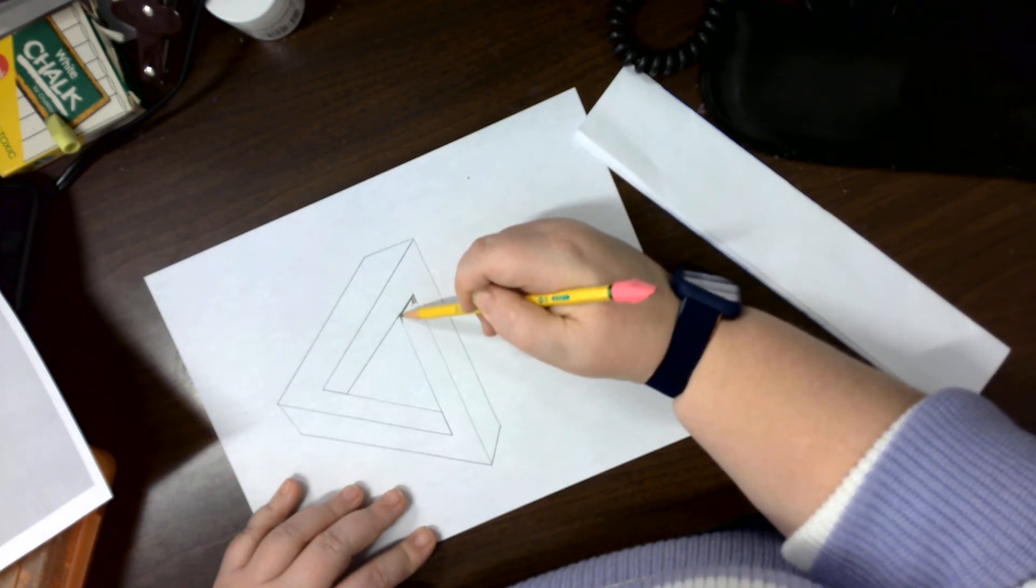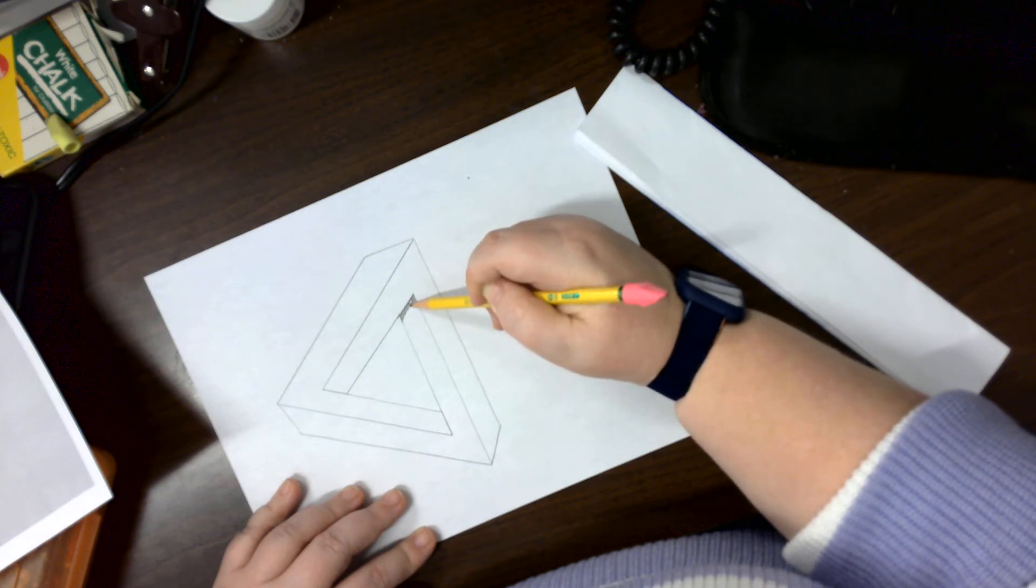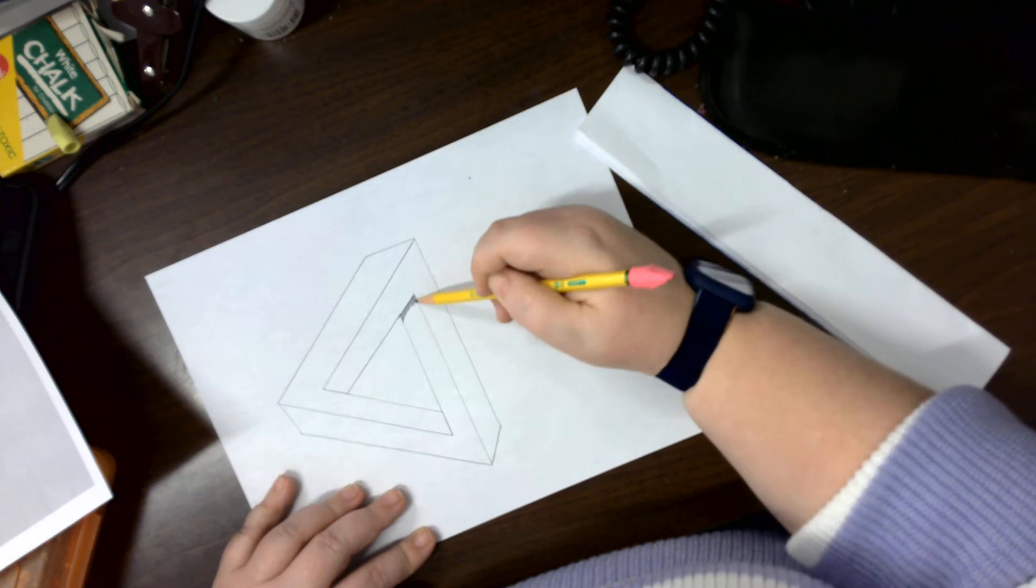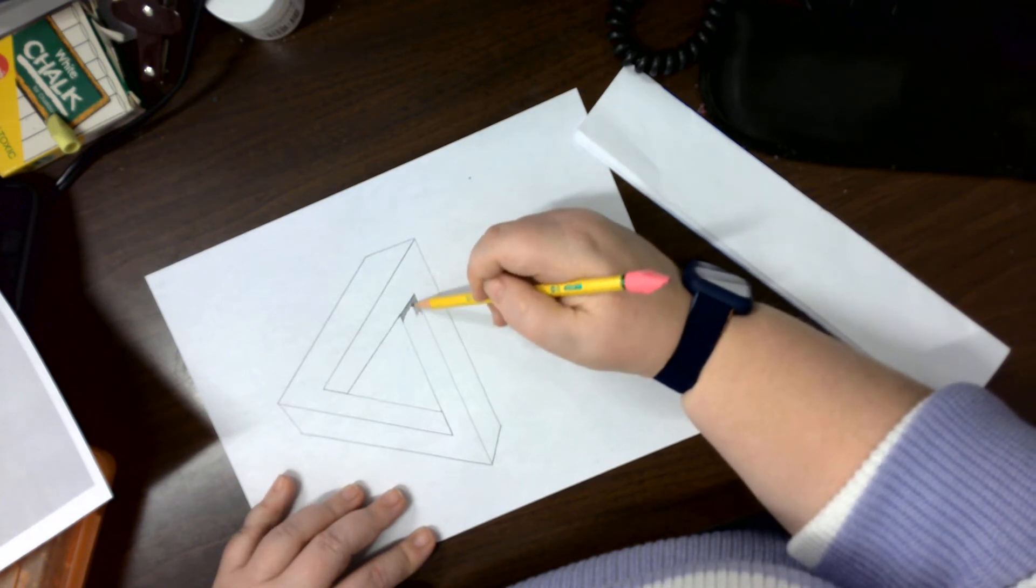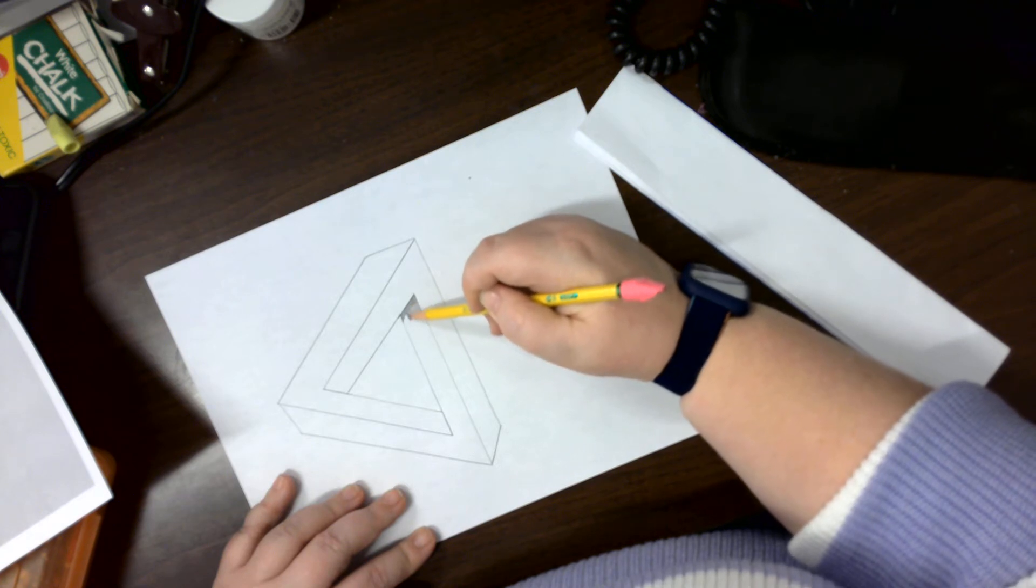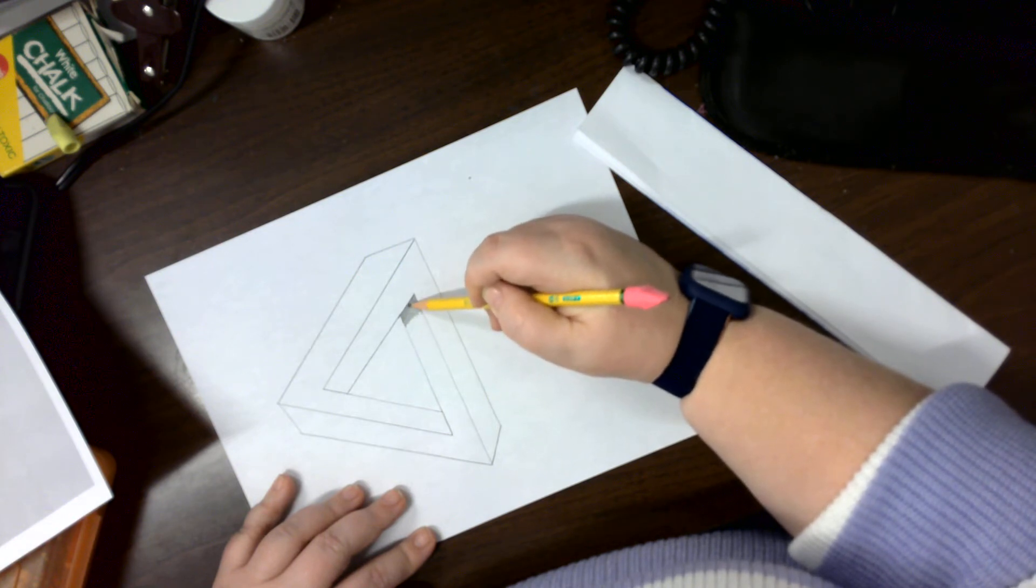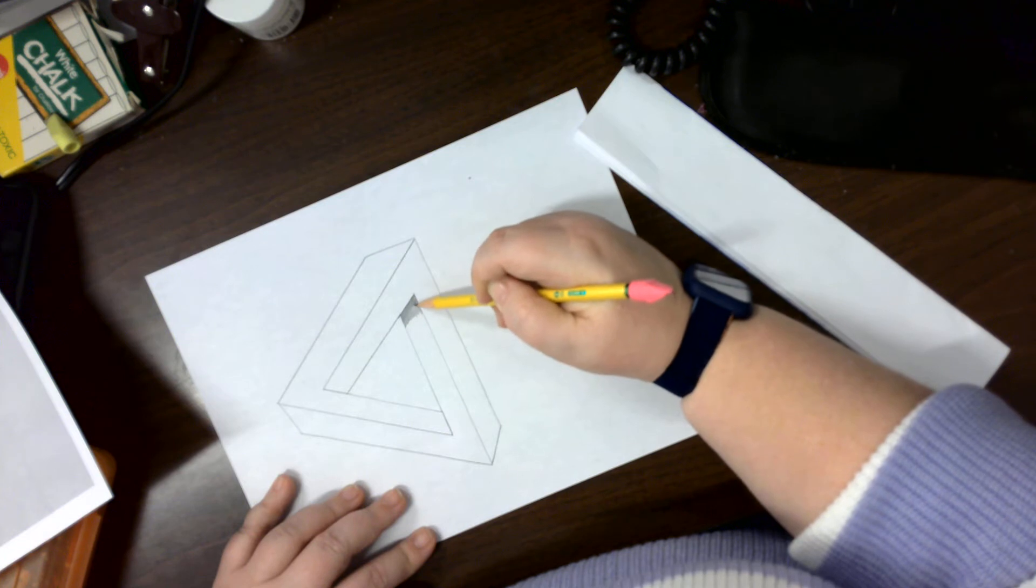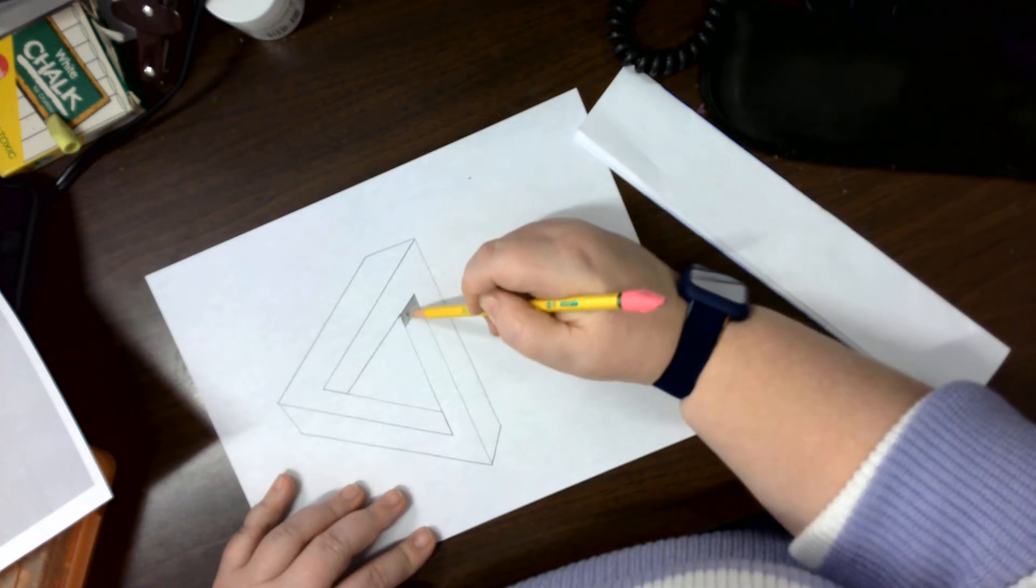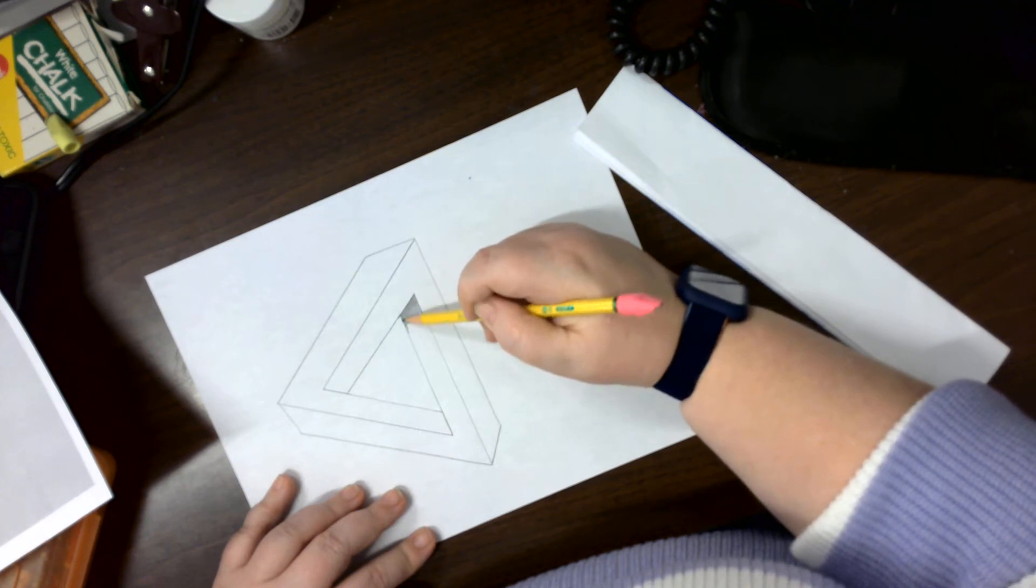I would start off dark and then get lighter as I go out. Remember, you can always get darker, but once you go a certain darkness you might not be able to erase it again, so don't get too dark. When you're farther out from the side, it's just about layering. As I'm going out here, I'm doing it lighter.